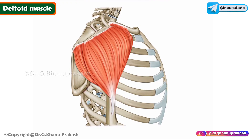In today's video we are going to discuss the anatomy of the deltoid muscle. The deltoid muscle is a large triangular muscle located in the shoulder region, and its name comes from its shape, which is similar to the uppercase Greek letter delta.